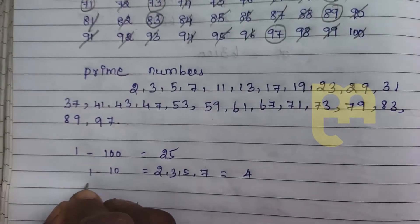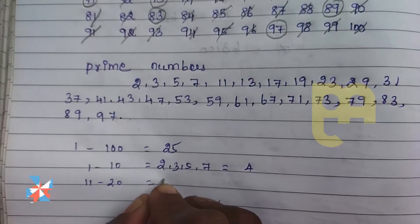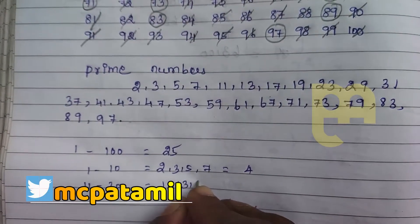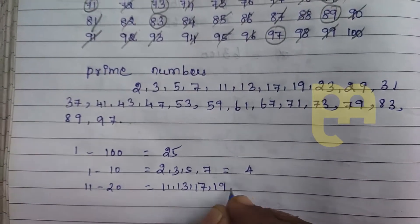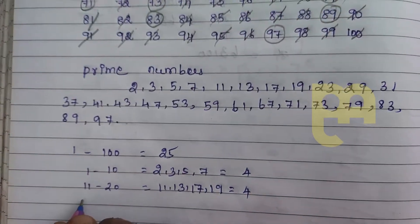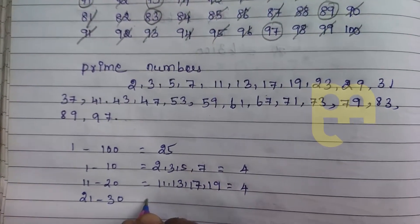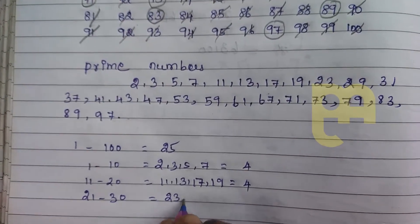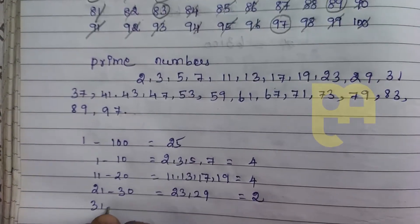If you add numbers in 11 and 20, you see how to find 9 prime numbers. Look at what the prime number is. If you add 1 to 10, you will reduce the count. You will add numbers to 9.